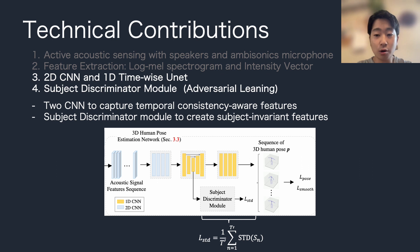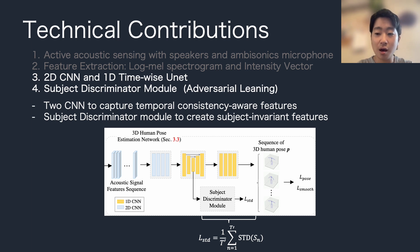The last component of our framework is the CNN part and subject discriminator module. Acoustic features are fed into 2D CNN layers to generate temporal consistency-aware acoustic features. Then, a 1D timewise unit is used to output smoother and more stable poses.